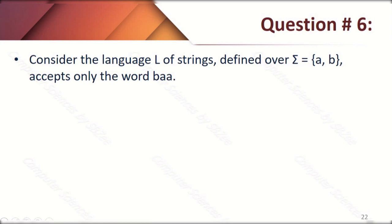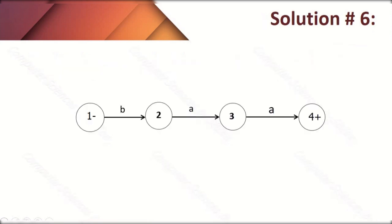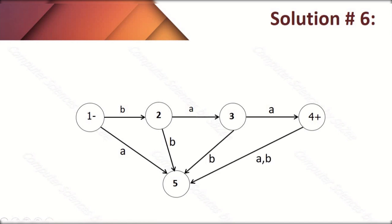Question number six: consider the language L of strings defined over sigma {a, b} that accepts only the word 'BAA'. The condition is that the machine accepts only this single word — all other words are rejected. We send all remaining transitions toward the dead state. At state 1, the 'a' transition goes to the dead state. At state 2, 'b' goes to dead state, and at state 4 both 'a' and 'b' go to dead state. This is the required FA for question six.